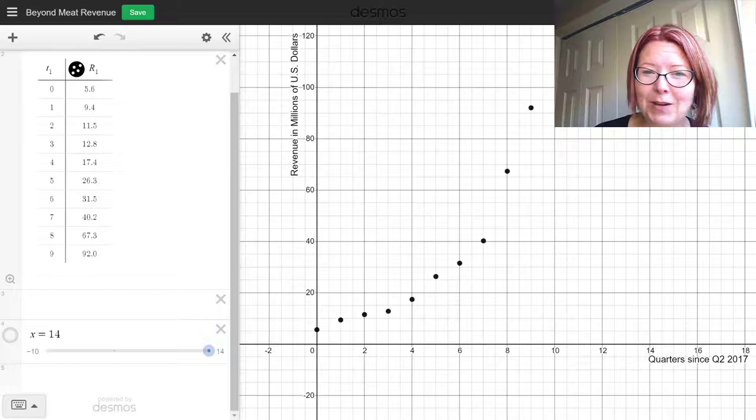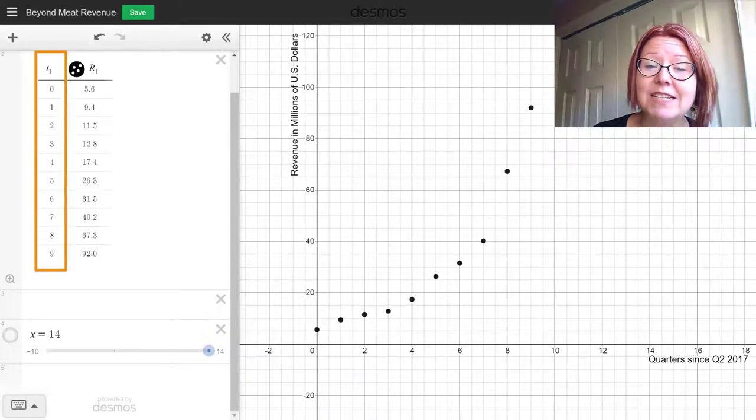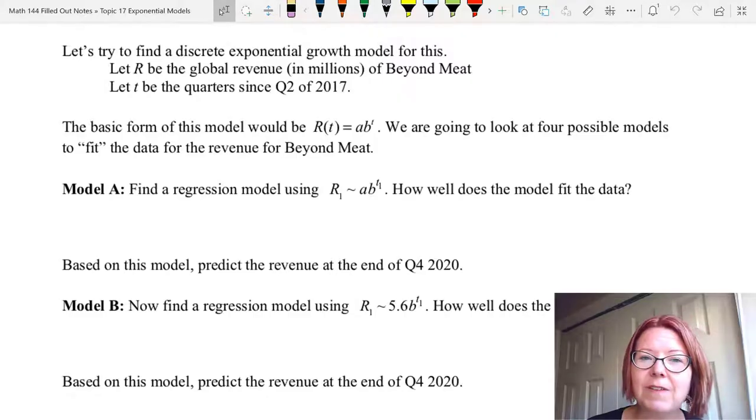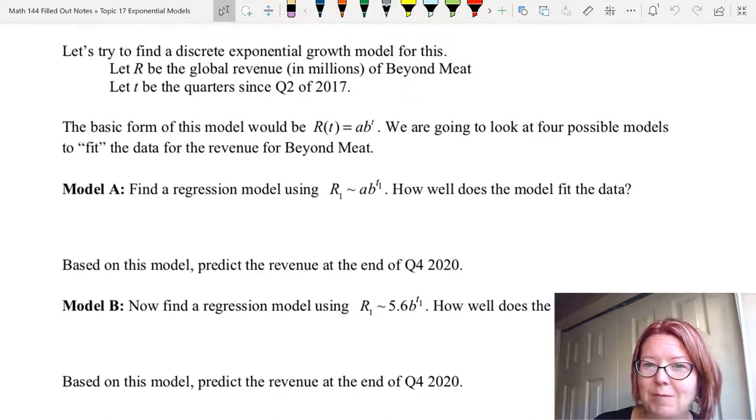I've taken this data and plotted it in Desmos using t sub one for the first column and capital R sub one for the second column. Now we're going to find a discrete exponential growth model for this. We're going to let r be the global revenue in millions of beyond meat and lowercase t be the quarters since quarter two of 2017. The basic form of this model would be r of t equals a b to the t. And we're going to look at four possible models we could use to fit the data for the revenue, because I want to show you how much variation there can be.